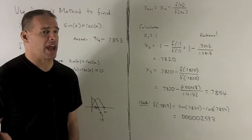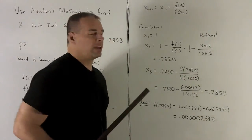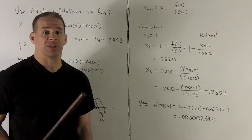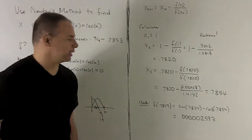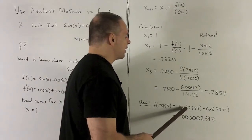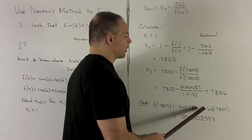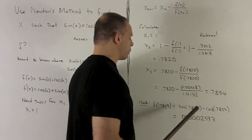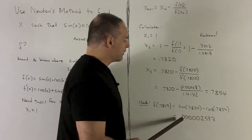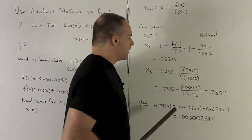We can always check our answer. So I'm just going to stick it back into f and what should come out should be really close to zero since we're approximating. Okay. We stick in sine of 0.7854, subtract cosine of 0.7854. And you notice I'm going to have zero up to five decimal places.